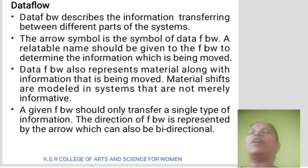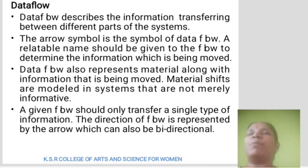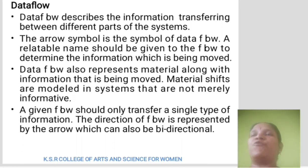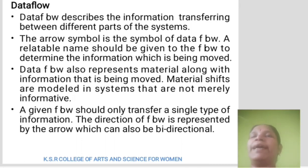A process is named with a short sentence, one word, or a phrase to express its essence. Data flow describes the information transforming between different parts of the system. The arrow symbol represents data flow. A relatable name should be given to the flow to determine the information being moved. Data flow also represents material along with the information being moved. The given flow should only carry a single type of information, and the direction of flow is represented by the arrow, which can also be bidirectional.